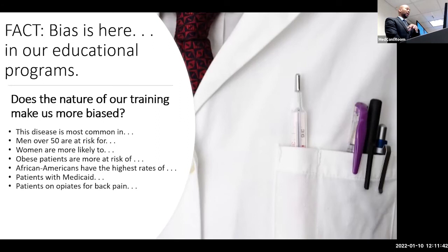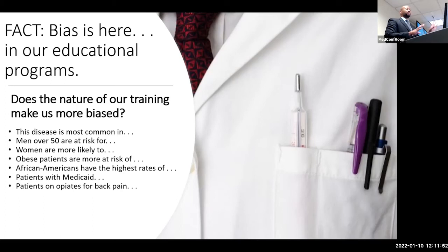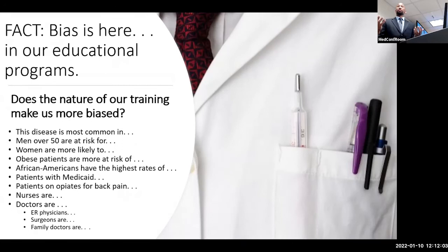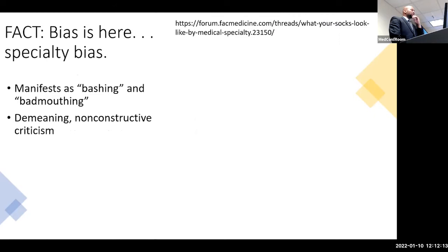We teach you information, we teach you risk factors — patients over 50, men with a past medical history of this are more likely to — but it morphs. At least how I trained, it morphed so that it became 'patients with Medicaid,' 'patients with back pain.' What do we say about other providers? Nurses are like this, doctors are like that. What about PAs and NPs? The bias between specialties is real.